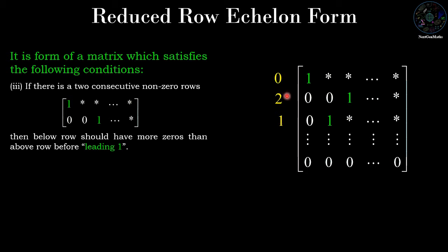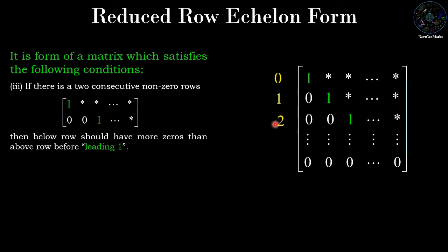The first and second rows satisfy the condition because the second row has two zeros before the leading one, which is more than the first row's zero zeros. However, the second and third rows do not satisfy the condition — the third row has only one zero while the second has two. So those rows need to be swapped to satisfy condition three.